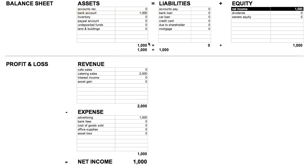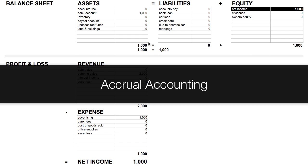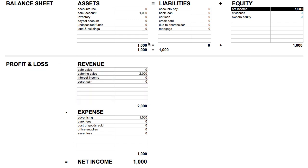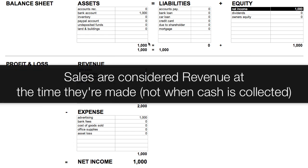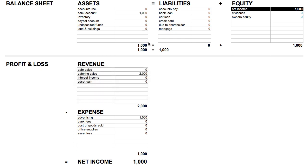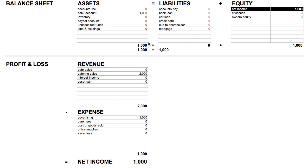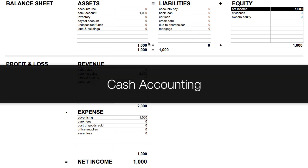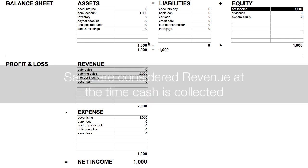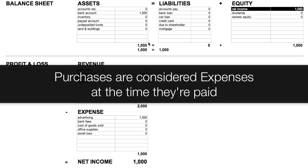What these two examples have demonstrated is Accrual Accounting. In Accrual Accounting, sales are considered revenue at the time they're earned — in other words, the time that a sale was made, and not when the actual cash was collected. Likewise, purchases are considered expenses at the time the purchase was made, not when it's actually paid for. Accounts Receivable and Accounts Payable are used to do this.